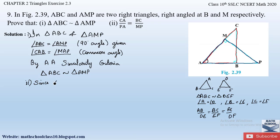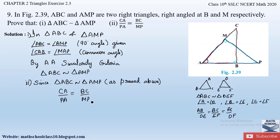Applying this to our similar triangles, since triangle ABC is similar to triangle AMP (as proved above), we can write CA/PA = BC/MP. We could also write the third side ratio, but only these two are asked. Note: if the first part had not asked us to prove similarity, we would still need to prove the triangles similar first before writing the ratio of sides.